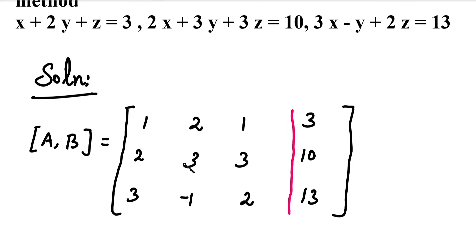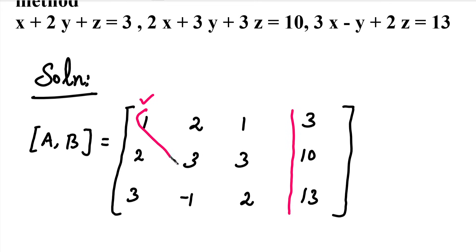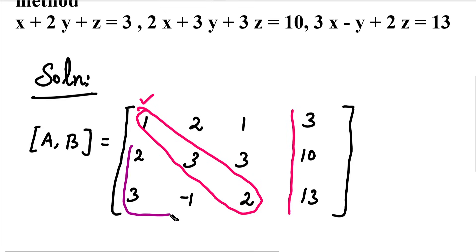In the 3×3 matrix, the first column contains the x coefficients, the second column is the y coefficients, and the third column is the z coefficients. We will solve this matrix as an upper triangular matrix. For a 3×3 matrix, the leading diagonal elements are the key — we solve to make those 3 elements the pivots.